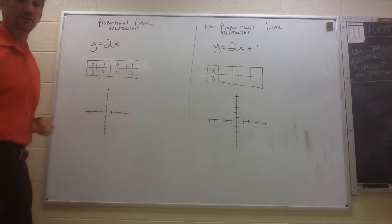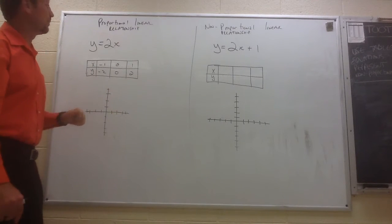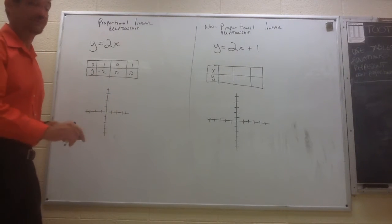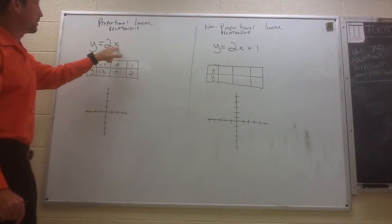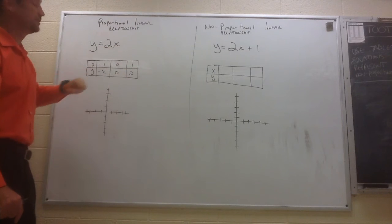Remember in a proportional relationship, when x is 0, y is 0. They will always pass through the origin if it's proportional. And the last input I picked was 1. If I plug in a 1 for x, when x is 1, 2 times 1 is 2.